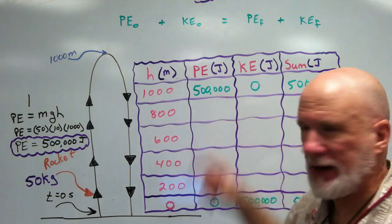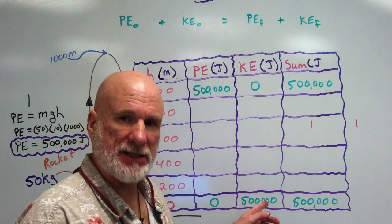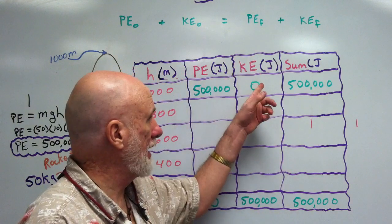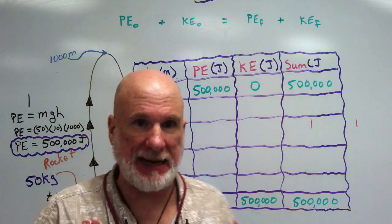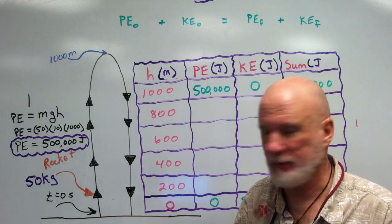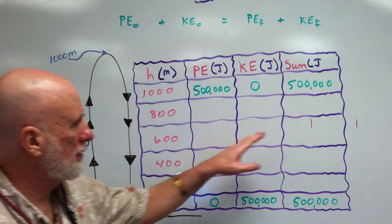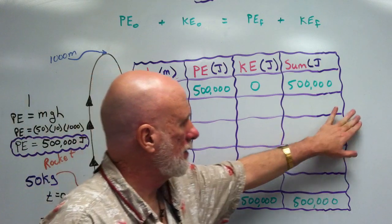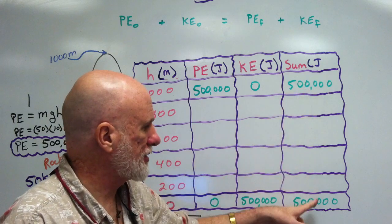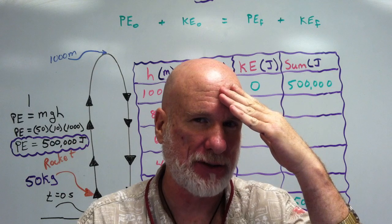It started at zero, went to 500,000. Now, the kinetic energy, it must have started off at 500,000 for it to get up there, and then it runs out, runs out of steam, because that was max before it starts to fall back down to Earth. Okay? Now, the sum, the sum is going to be 500,000. Just keep that in mind. The sum is 500,000. Okay?